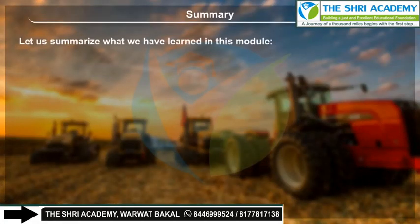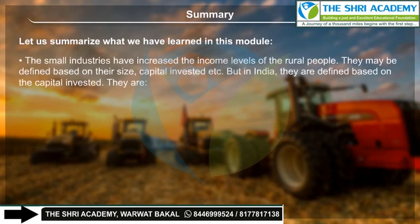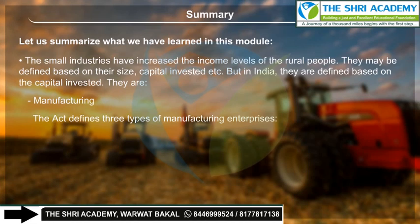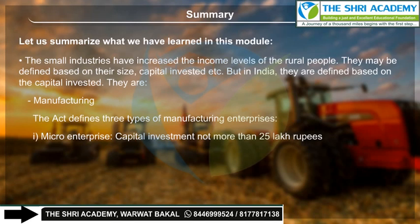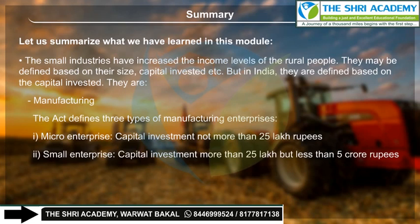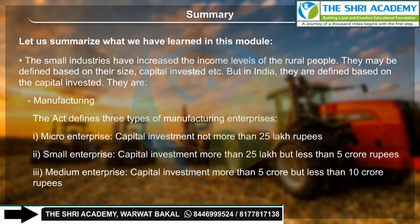Summary: Small industries have increased the income levels of rural people. In India, they are defined based on capital invested. Manufacturing enterprises are classified as: 1. Micro enterprise — capital investment not more than 25 lakh rupees; 2. Small enterprise — capital investment more than 25 lakh but less than 5 crore rupees; 3. Medium enterprise — capital investment more than 5 crore but less than 10 crore rupees.